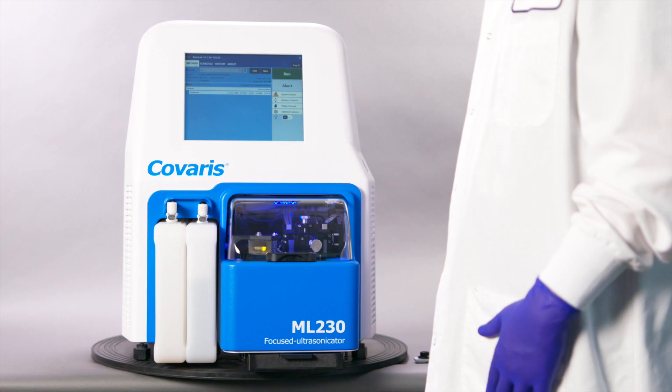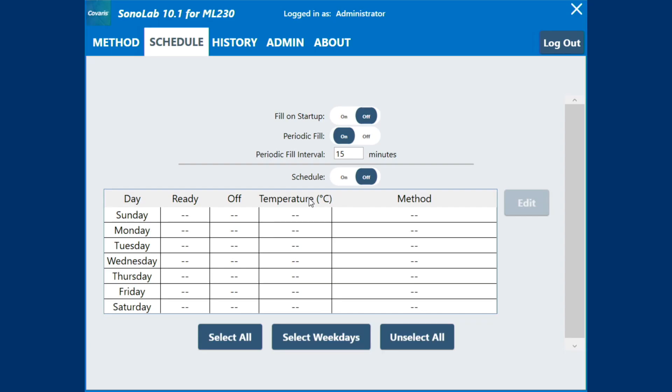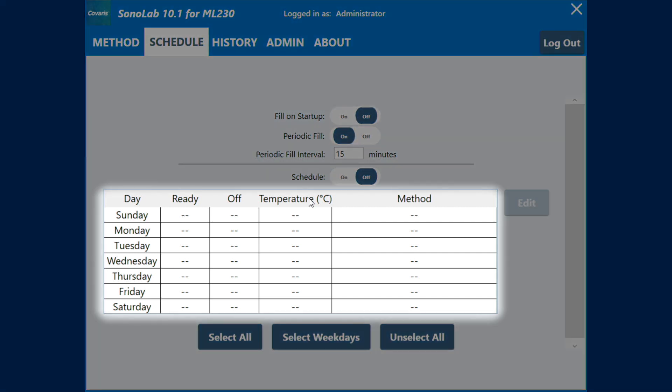If your instrument will be idle for an extended time, such as overnight, you should make sure to shut down the instrument. You can also use the scheduling feature in Sonolab to have the system automatically drain the water bath and shut down on specific days of the week.